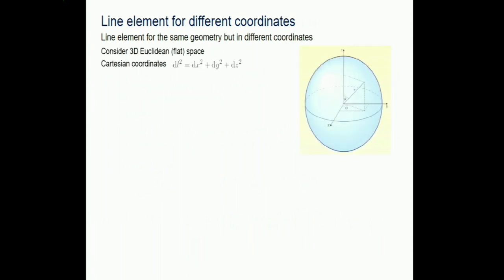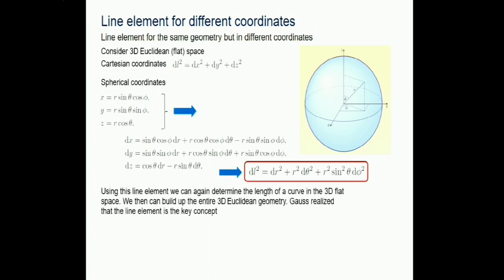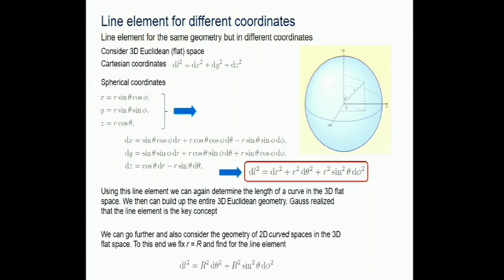You can do this also on a sphere in spherical coordinates. Expressing dx, dy, dz in spherical form gives the line element. Once you have line segments, you can define angles and build up the entire geometry from that simple equation - everything up to here was in flat Euclidean space.